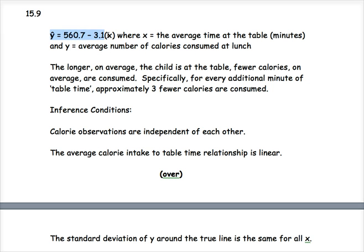So when I wrote the regression equation, I wrote it in terms of y hat. That is the estimated number of calories consumed. Here is the intercept. Notice here the intercept wouldn't have a reasonable interpretation. If x is 0, if there's no time spent at the table, this suggests that the students would consume 560.7 calories. That really doesn't make sense.